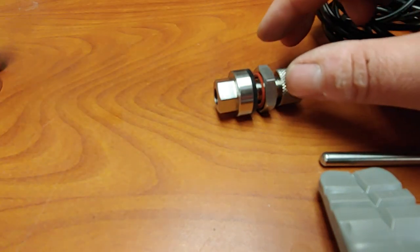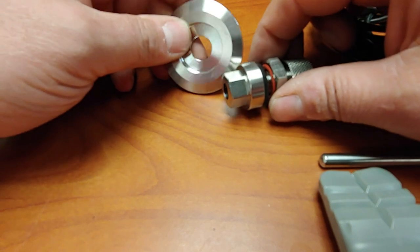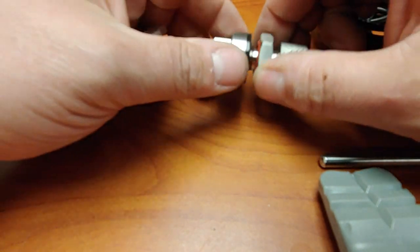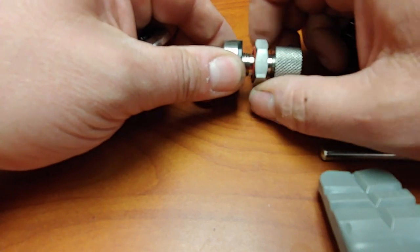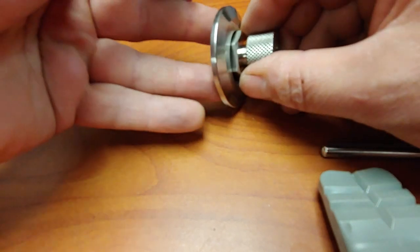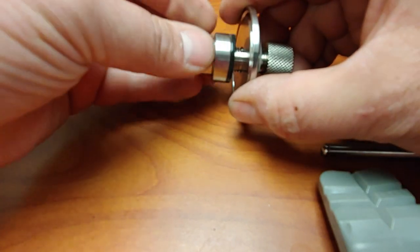Also, if you have a tri clamp port, they have this adapter plate to go to inch and a half tri clamp. This whole fitting gets used for that. You put this in here and then put this backing nut on here.